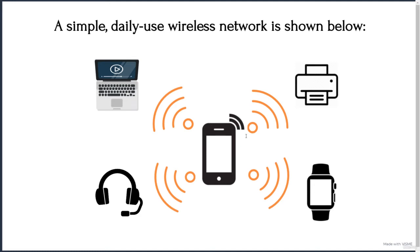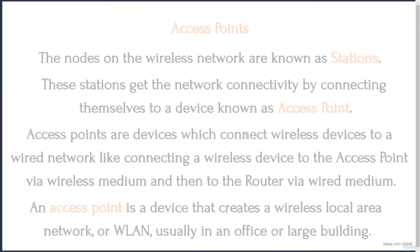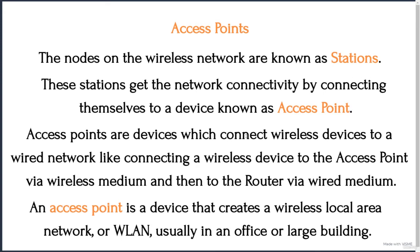In Wi-Fi, stations get internet connectivity by connecting themselves to a central device. This central device keeps every station connected and is commonly known as the access point.